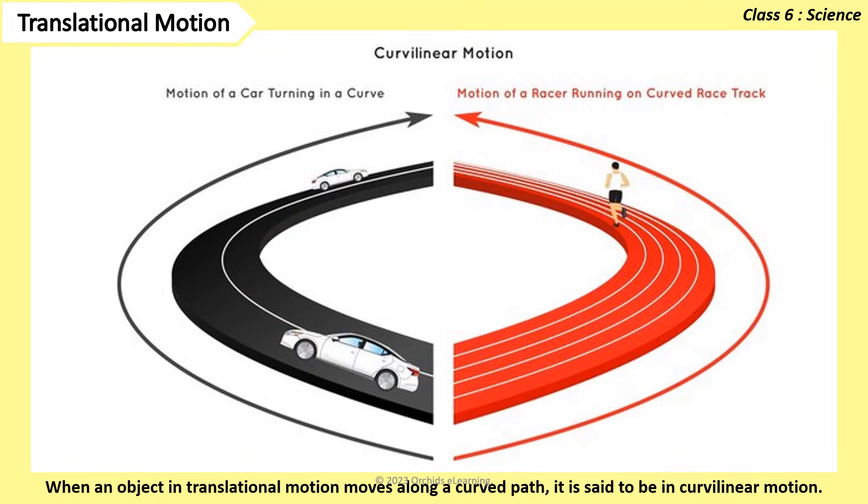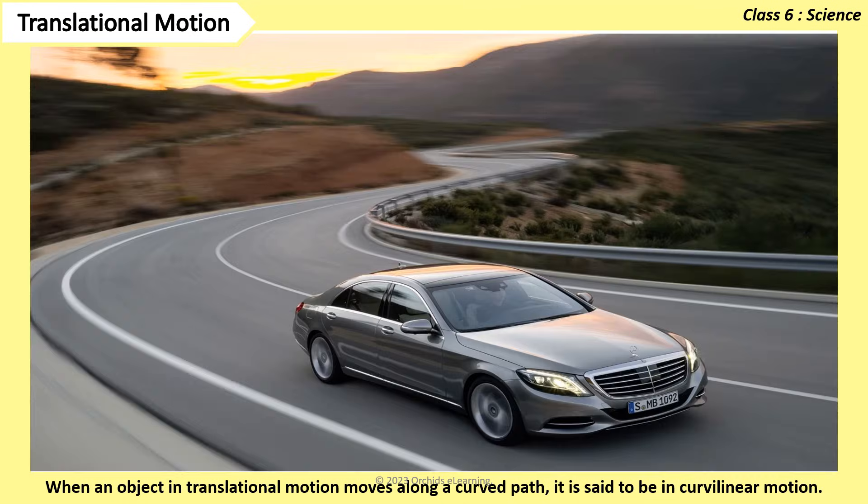When an object in translational motion moves along a curved path, it is said to be in curvilinear motion. Example, a car taking a turn.